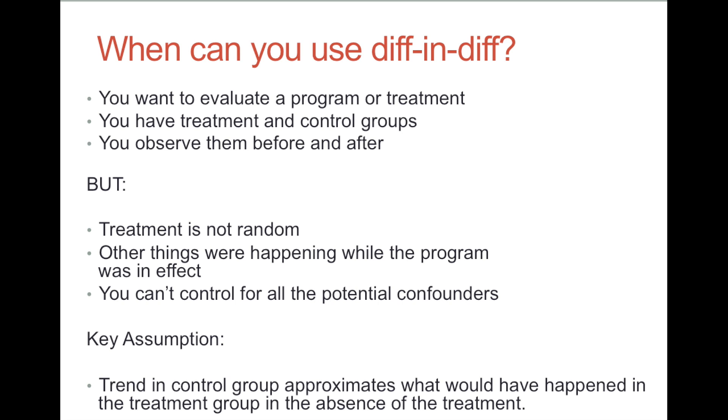If the treatment was assigned to different groups based entirely on observable characteristics, you could use multiple regression and control for these characteristics to get an estimate of the program effects. Unfortunately, you often don't know how the program was assigned or what other differences might exist between the treatment and control groups.